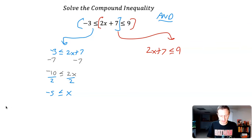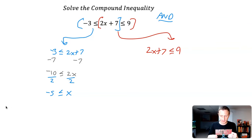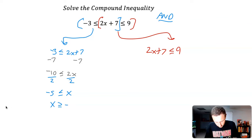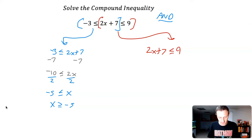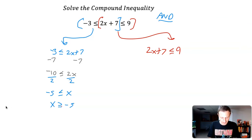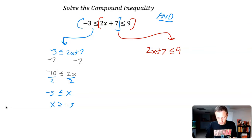I always like to write these with my variable on the left side so that when I translate it to a number line it's easier to read. So I rewrite it as x is greater than or equal to negative five. I'm not flipping the inequality — I'm not dividing by a negative or anything like that. I'm just rewriting it visually: the inequality opens toward x, so x is greater than or equal to negative five.